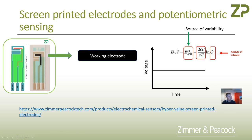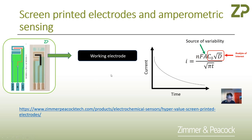When we do a potentiometric measurement, we take the screen printed electrodes and functionalize the working electrode to be ion-sensitive. The potential is equal to a constant plus a series of other constants times the log of the concentration of the analyte of interest. So for a constant concentration, the signal is fairly constant.